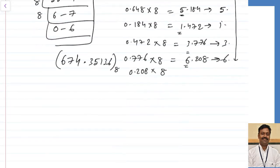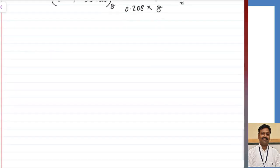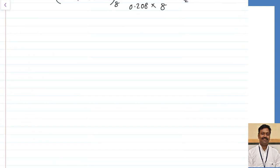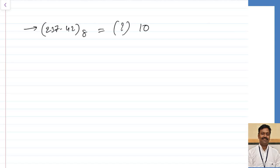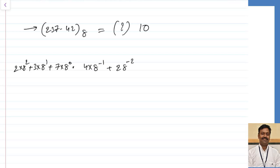Now let us convert from octal to decimal. Given 237.42 in base 8, convert to base 10. From the fraction point: 7×8⁰ + 3×8¹ + 2×8² + 4×8⁻¹ + 2×8⁻². Calculating this gives 159.53125 in base 10.